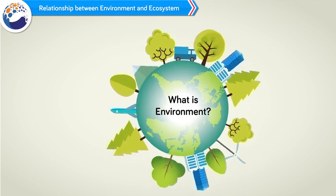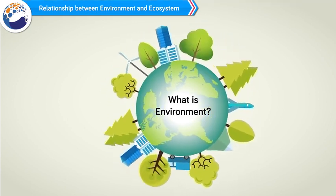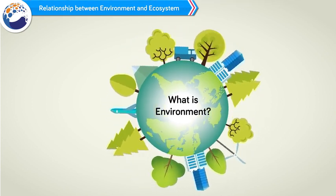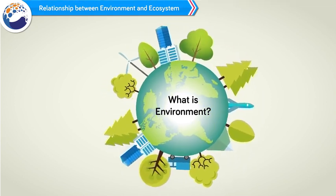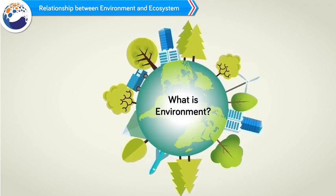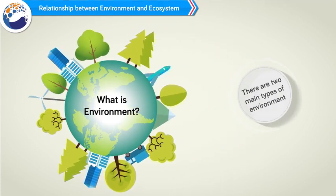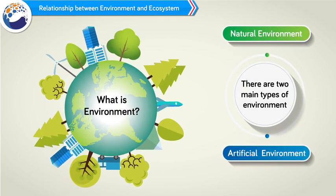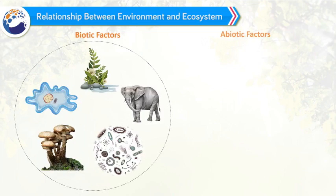Relationship between environment and ecosystem: What is environment? Environment is a broad concept. Physical, chemical, and biological factors affecting the living organisms in any possible way are collectively called as environment. In short, environment is the condition in the surroundings. It includes many biotic, abiotic, natural, and artificial factors. There are two main types of environment: natural environment and artificial environment. Basically, environment consists of two basic factors: biotic factors and abiotic factors.